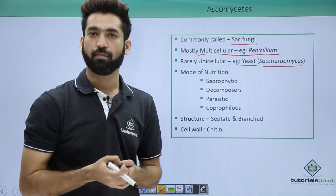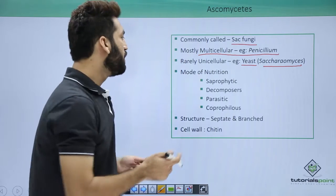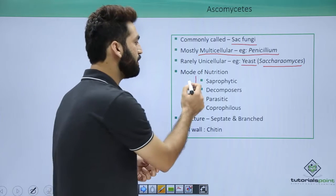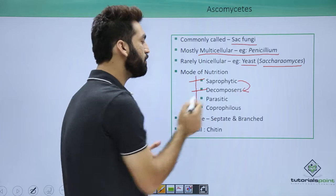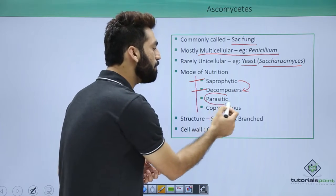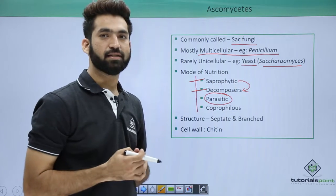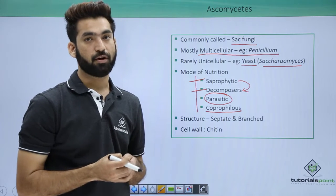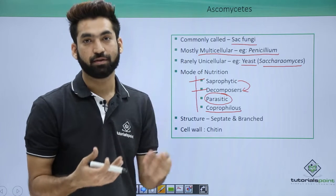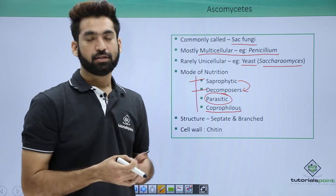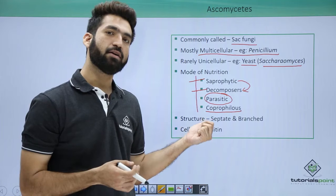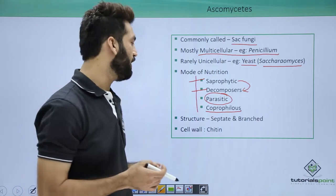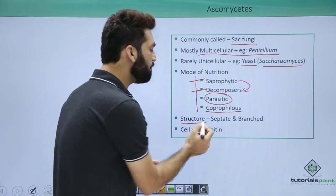Yeast, which is Saccharomyces, is used for beer, wine, or bread production and is a unicellular fungus. When you talk about modes of nutrition, all these modes are present. They are saprophytes and decomposers. They are also parasitic — Penicillium is a parasitic fungus. They are also coprophilous, meaning they grow upon the dung of animals like cattle.